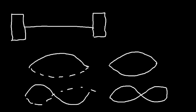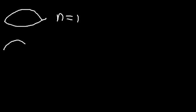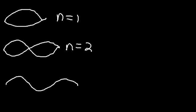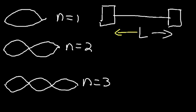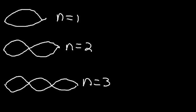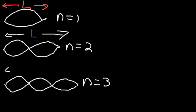Now let's talk about these shapes. If you have just one standing wave, n is equal to 1. If you have a pattern with two standing waves, n is equal to 2. If you get three standing waves, n is equal to 3. Now each of these standing waves has the same length, because the length of the string is fixed. So even though they don't appear to be the same, the length is actually the same — it's equal to the length of the string, L.